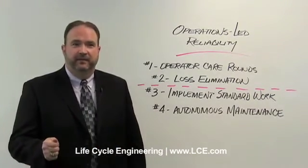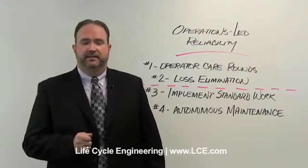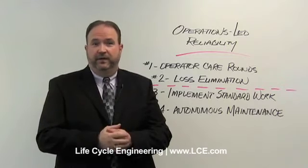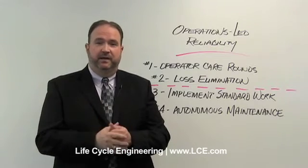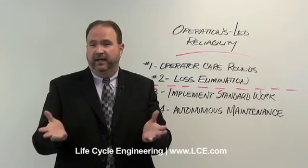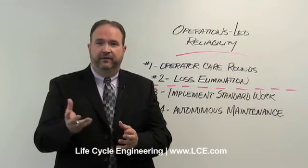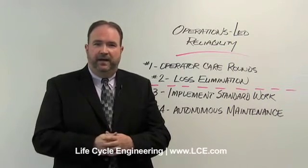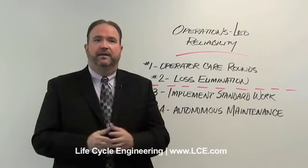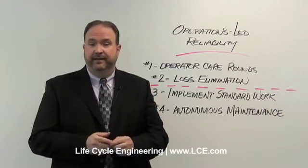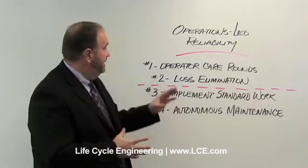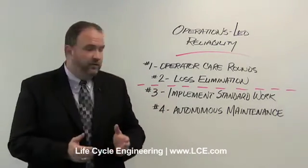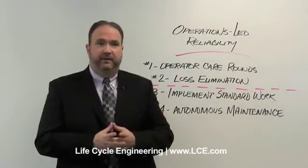The last step, step four, is autonomous maintenance. There are many books out there on TPM, and those seven steps of autonomous maintenance are very standard. Feel free to reach out to us if you'd like more information. I'd like to wrap up around what are the keys or success factors needed to make operator care rounds, loss elimination, implementing standard work, and autonomous maintenance happen.